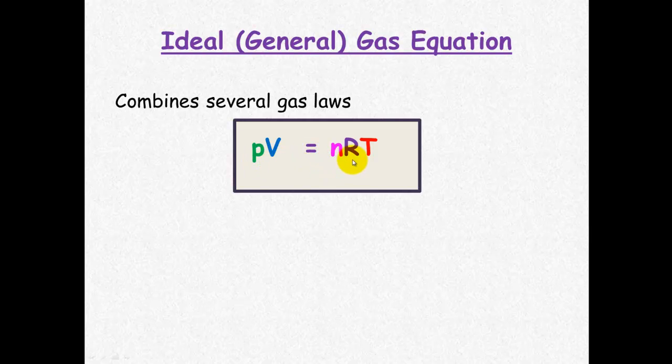PV equals nRT, where R is the ideal gas constant, which equals 8.31 joules per Kelvin per mole.